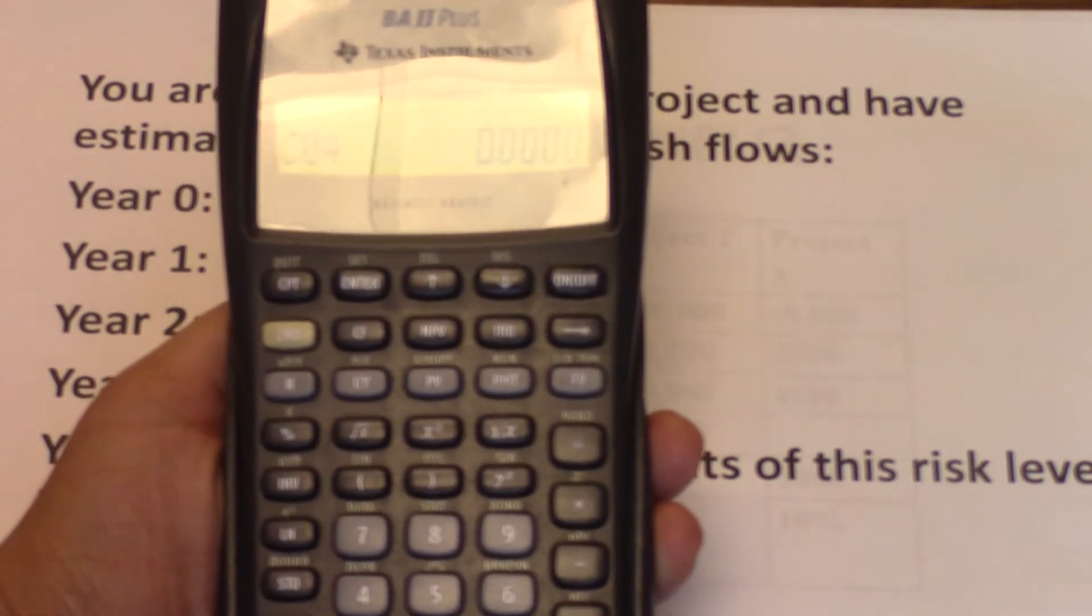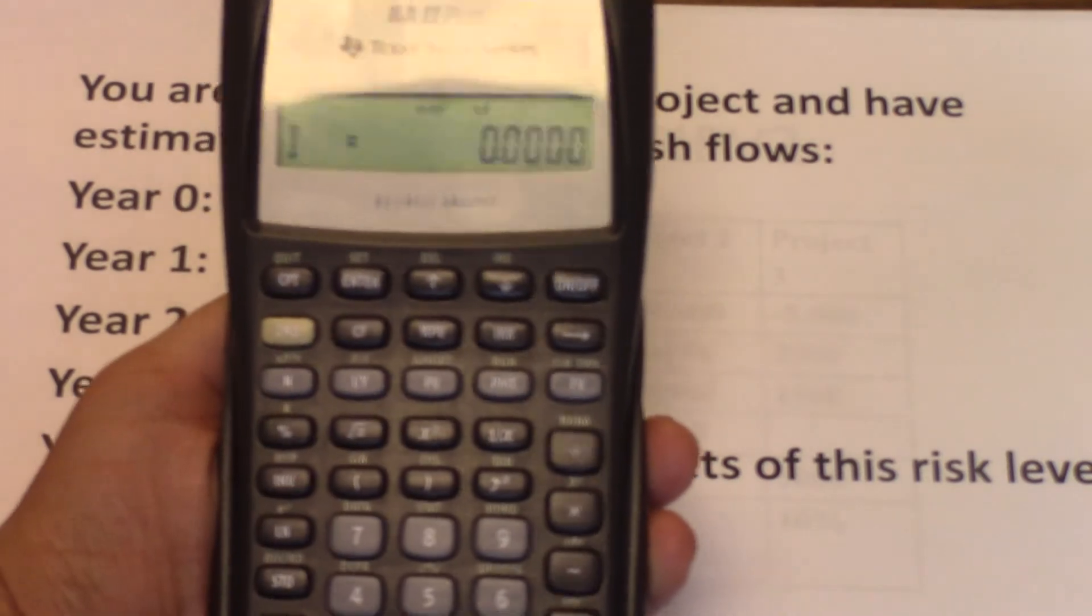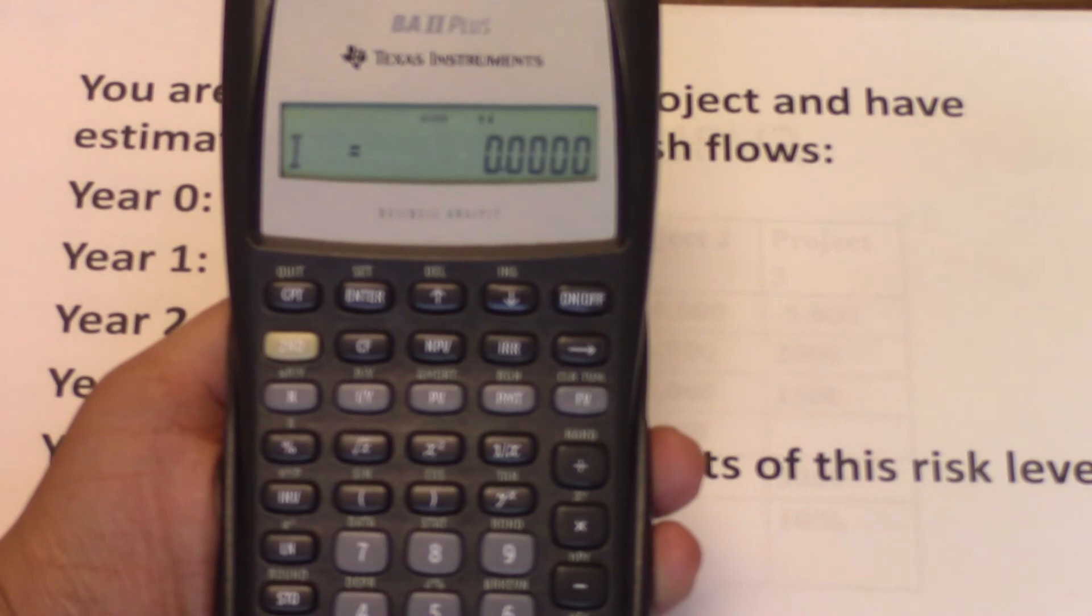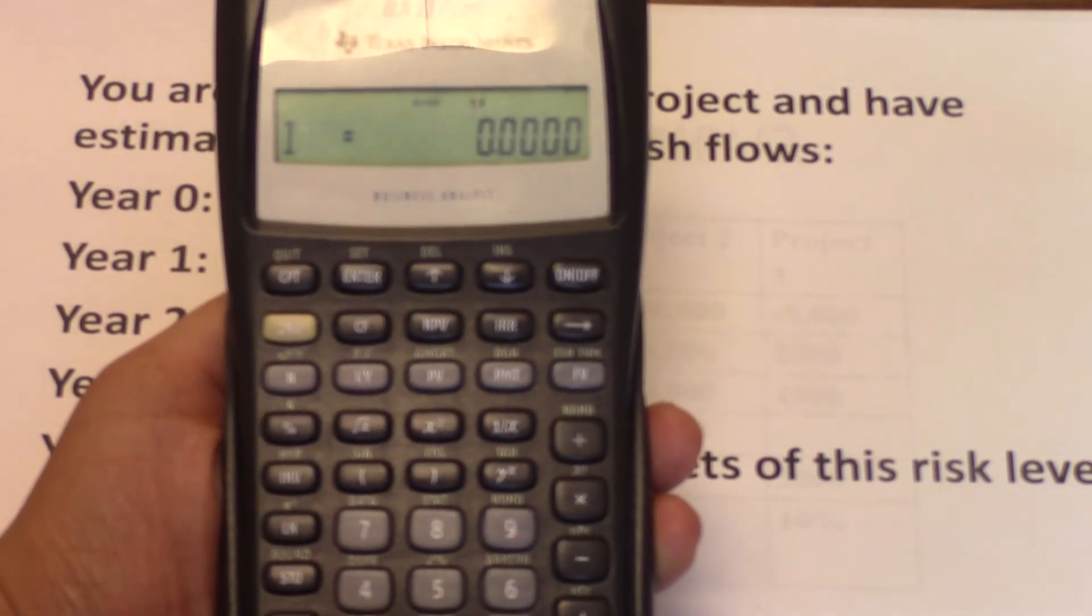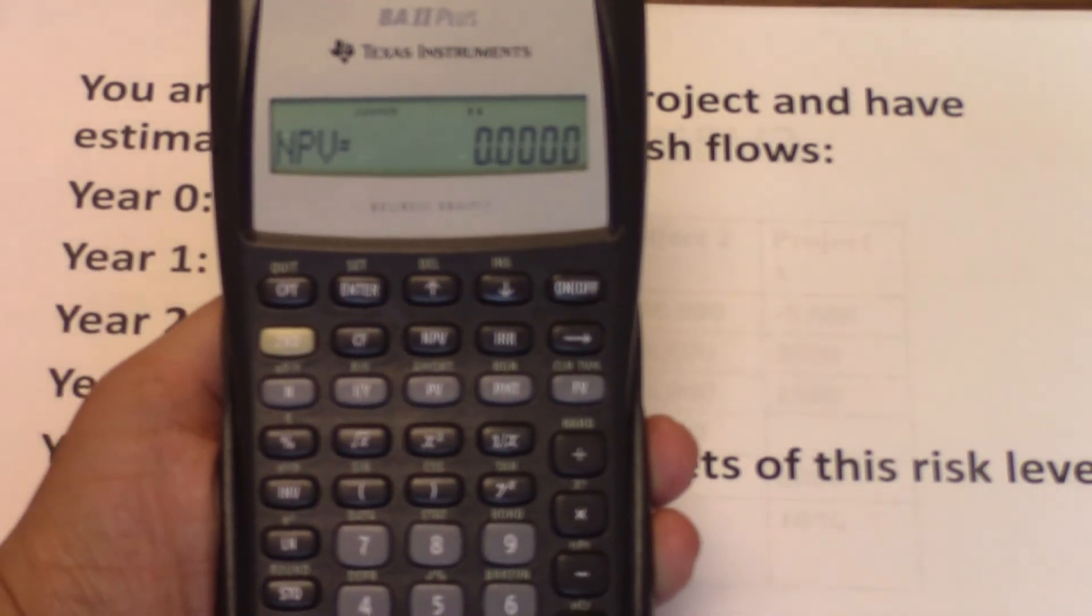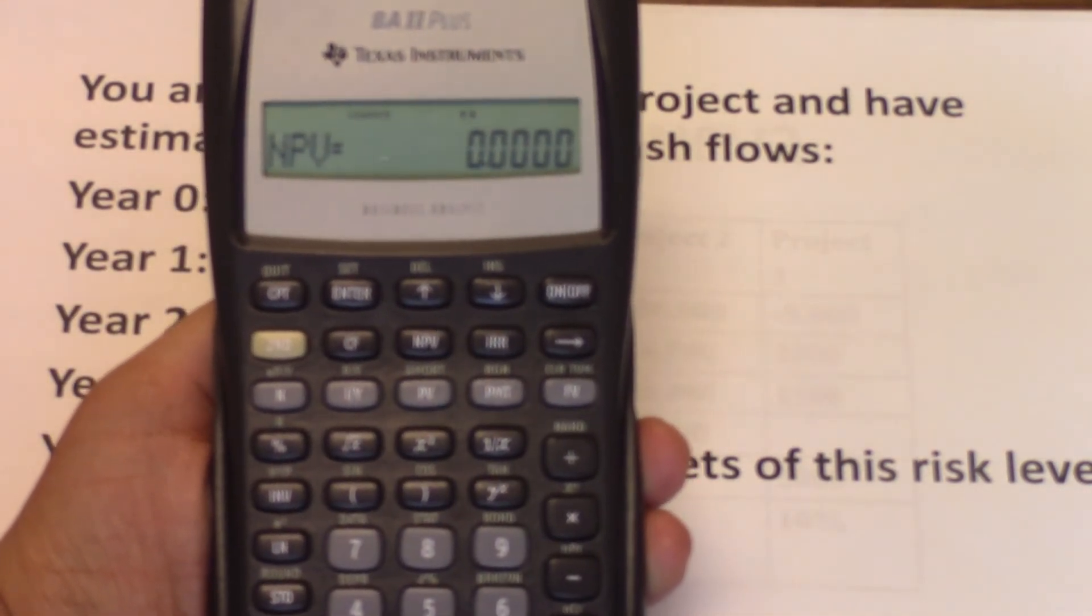Now we are ready to compute the NPV. You hit NPV. You're being asked for the I, which is the interest rate. Here, the required return for this project is 12%. So 12, enter, down arrow. And now the calculator is ready to compute.